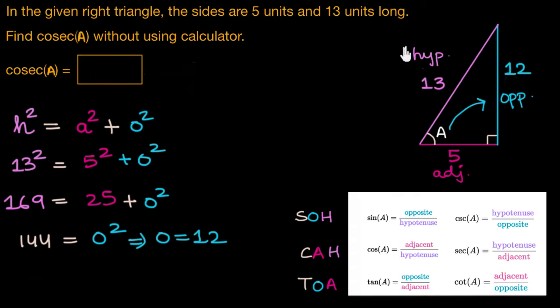And the ratio between the hypotenuse and the opposite side would be 13 is to 12. So the value of cosec A is 13 by 12.